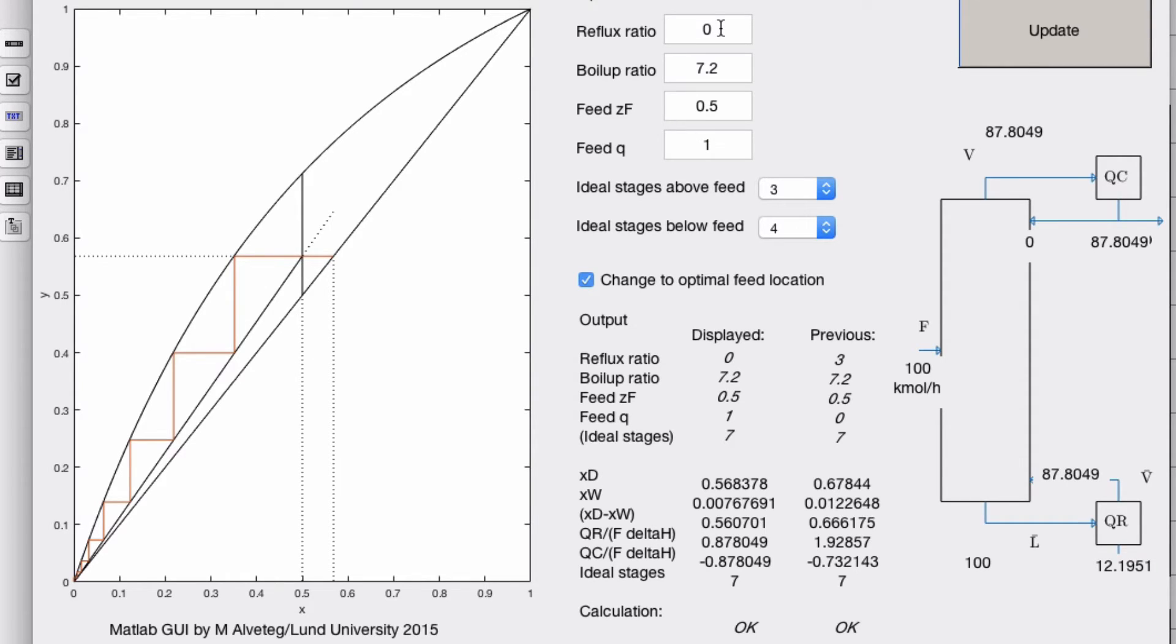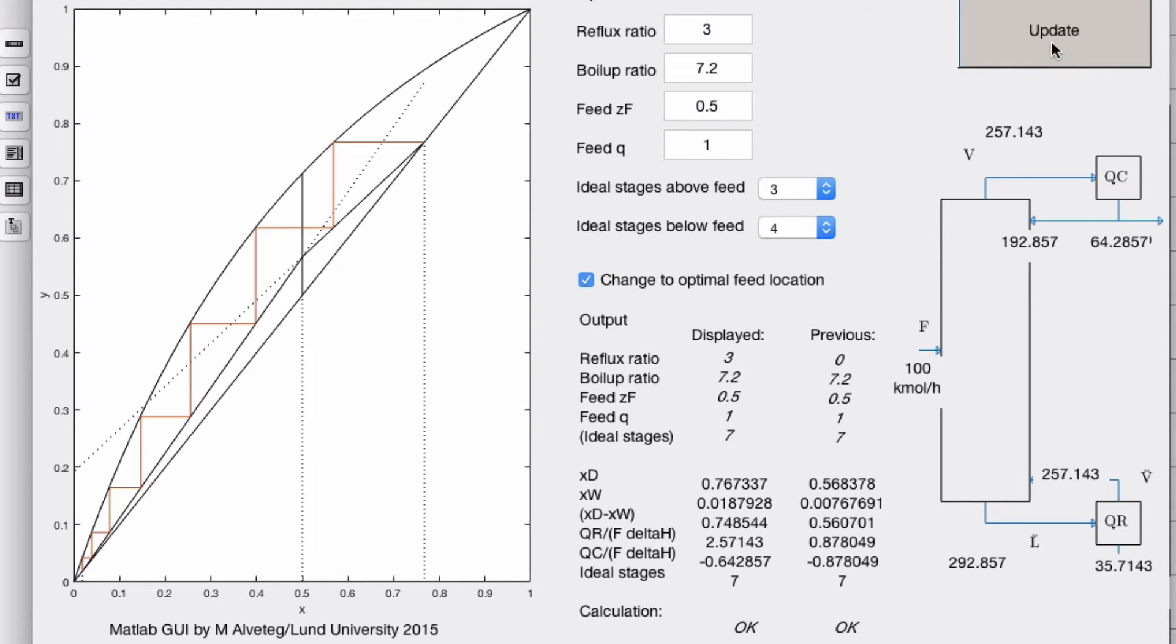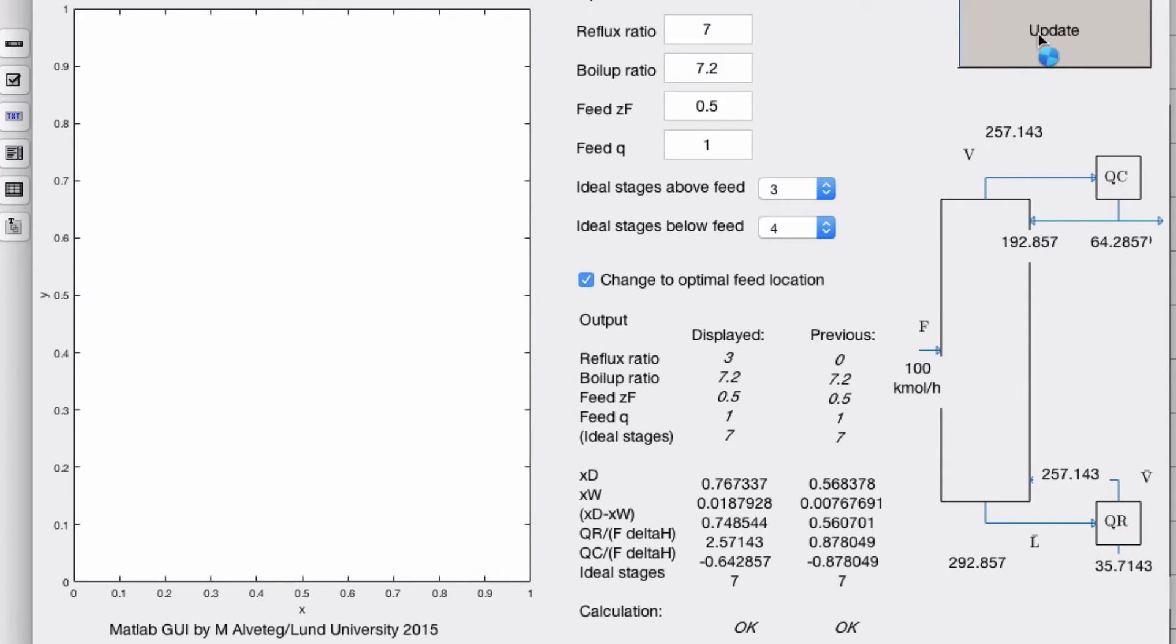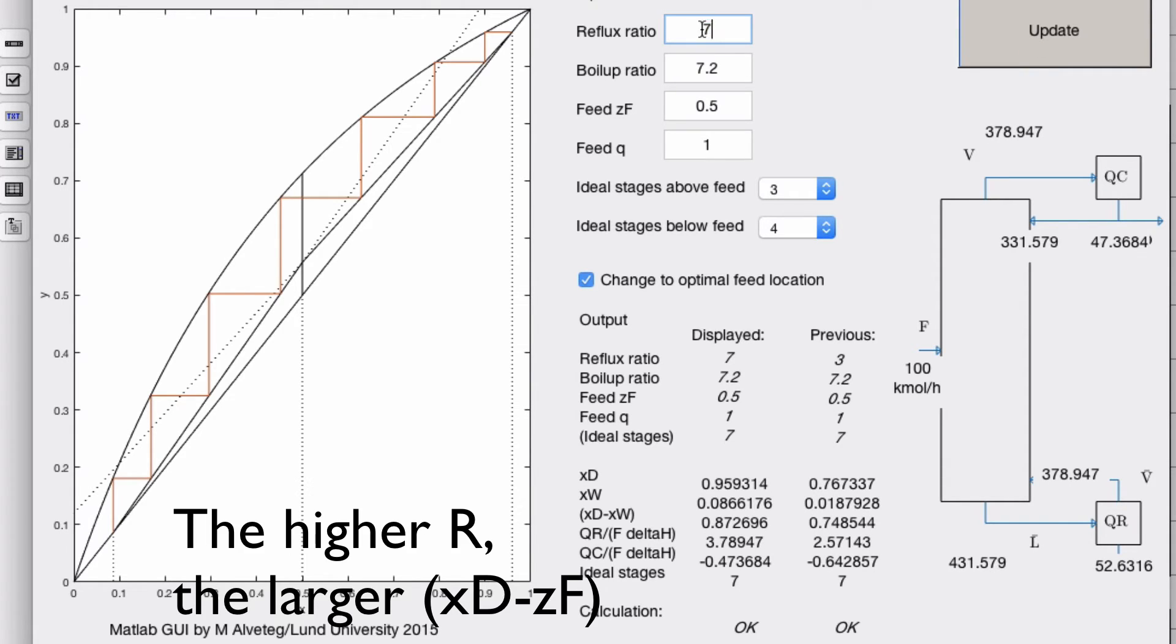Okay, let's play around with some other things. Let's increase the reflux ratio. You see now that xd here, that's 0.56. Let's increase the reflux ratio. Now xd moved away from the feed composition. And it moves even further away.